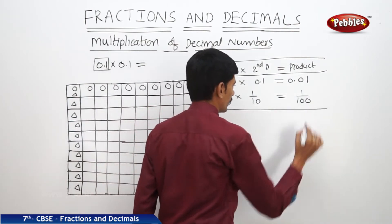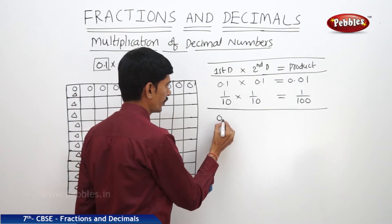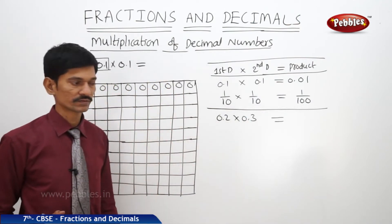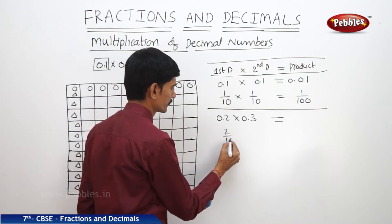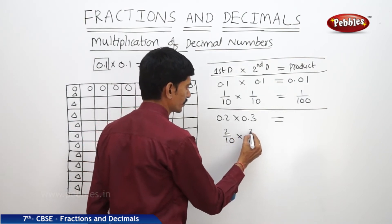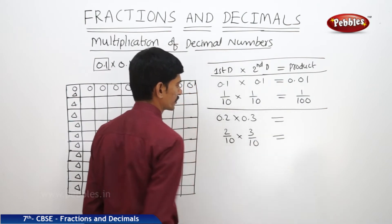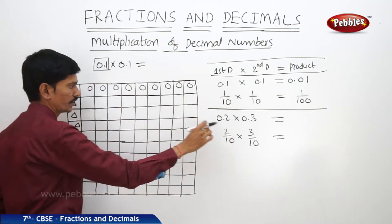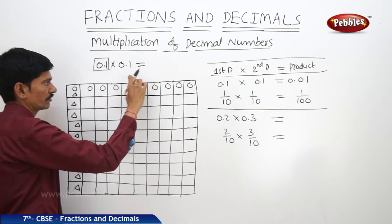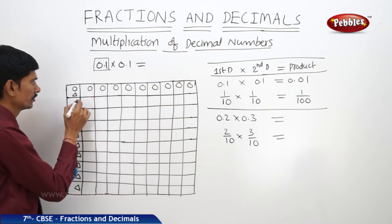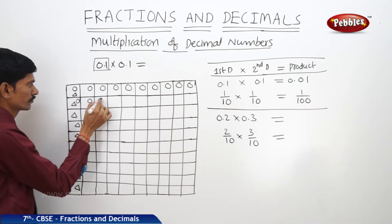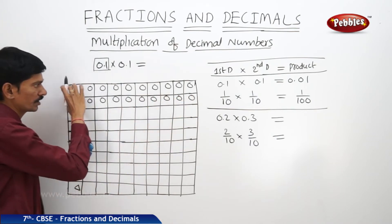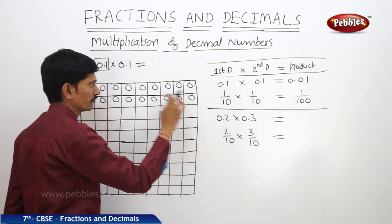Now, let us find another product of two decimal numbers: 0.2 into 0.3. So, 0.2 can be written as 2 by 10 into 0.3, which can be written as 3 by 10. So, 2 by 10 means out of 10 rows, we have to shade 2 rows. We will shade the first and second rows with circles. So, this horizontal shaded region represents 2 by 10 with circles.